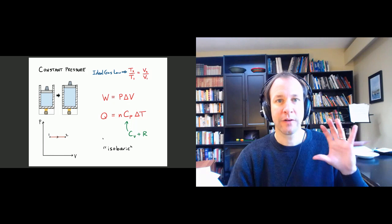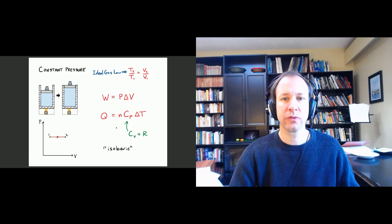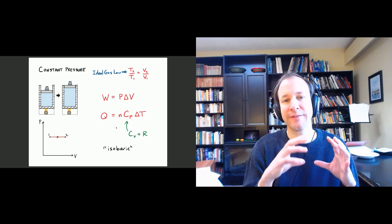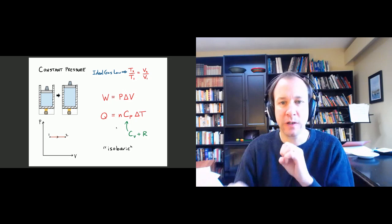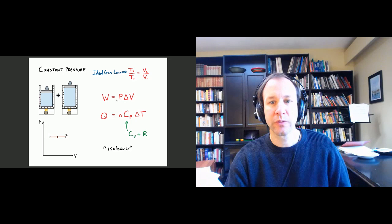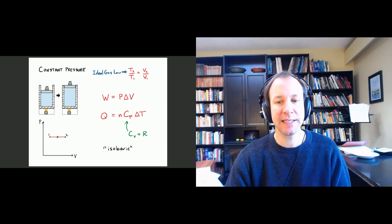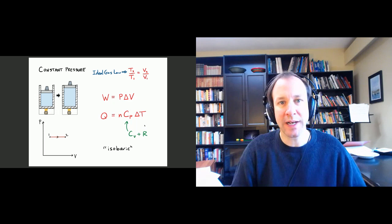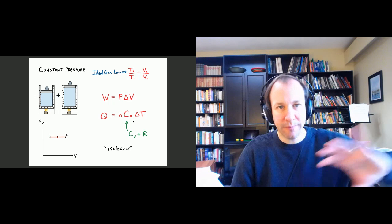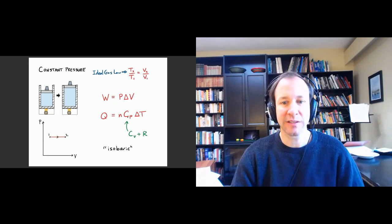For heat and the internal energy change, we use the same formula as usual for ΔU. For Q, we have Q = ΔU + W. Both of those terms are non-zero. The work, which is PΔV, can also be written as NRΔt using the ideal gas law. Combining that with ΔU, we get Q = NCpΔT, where we've defined Cp = Cv + R. To find Cp, you look up Cv, add R, and then calculate heat that way.